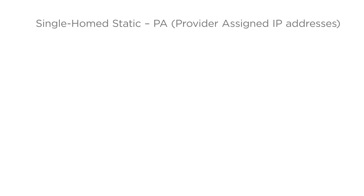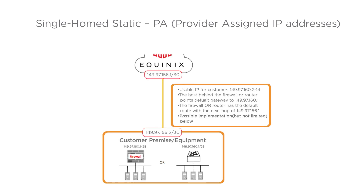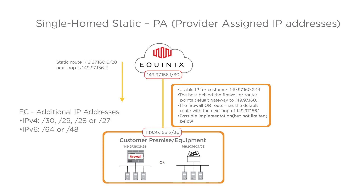Single-home static PA, or provider-assigned IP addresses. In this example, the customer is using a routed network behind their devices. The customer points the default route to the first IP on the slash 30 point-to-point subnet. The diagram shown is using slash 28 as an example for the routed subnet, with the slash 30 assigned free of charge. PA indicates that the customer is purchasing additional IP addresses from Equinix. IPv4 choices are slash 30, slash 29, slash 28, or slash 27. IPv6 choices are slash 64 or slash 48.